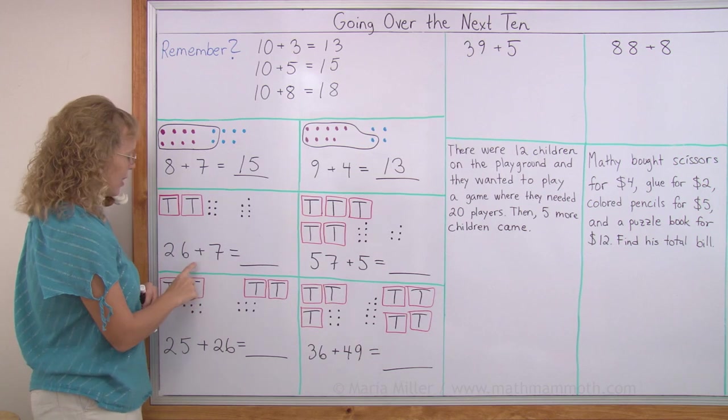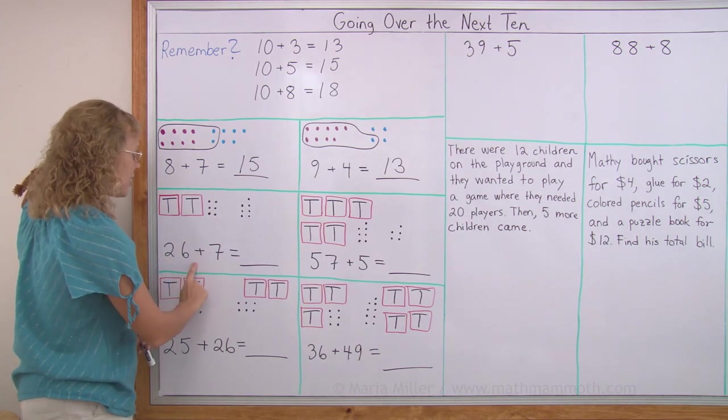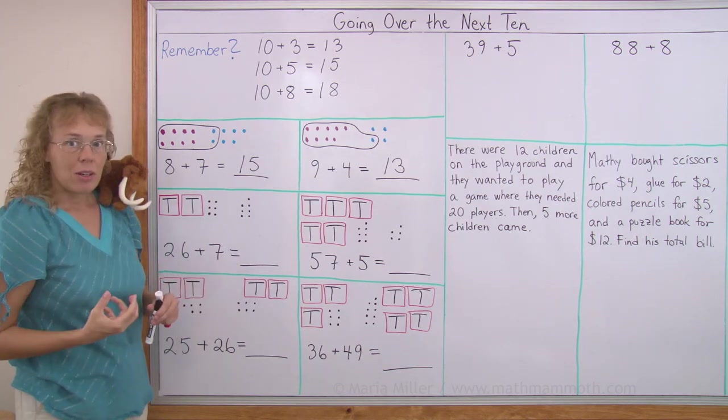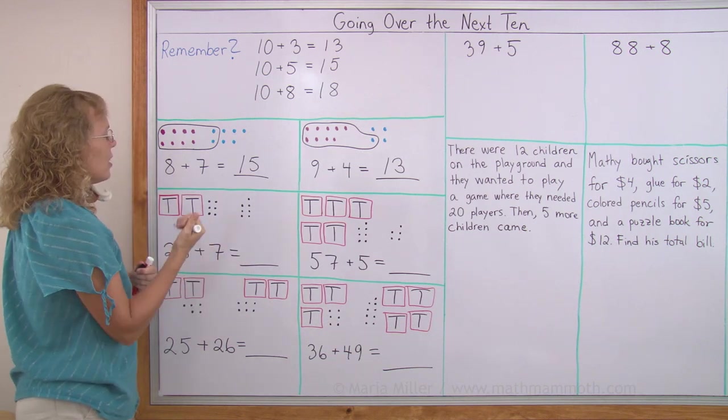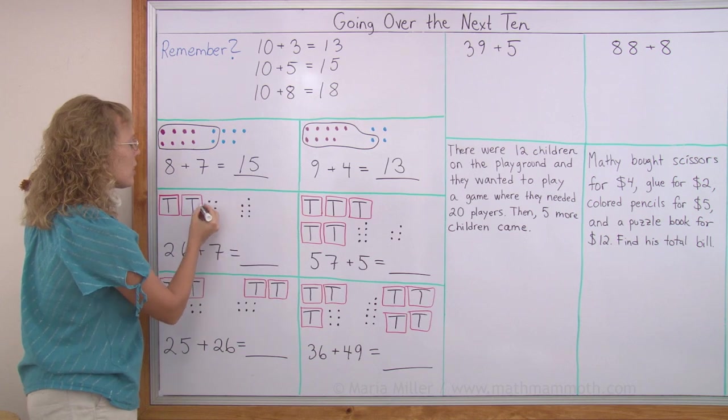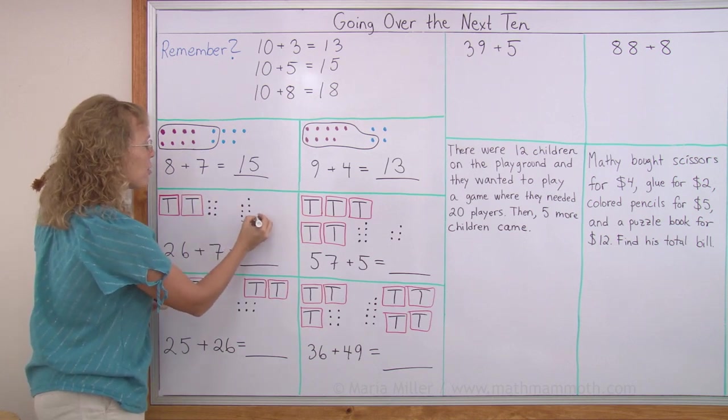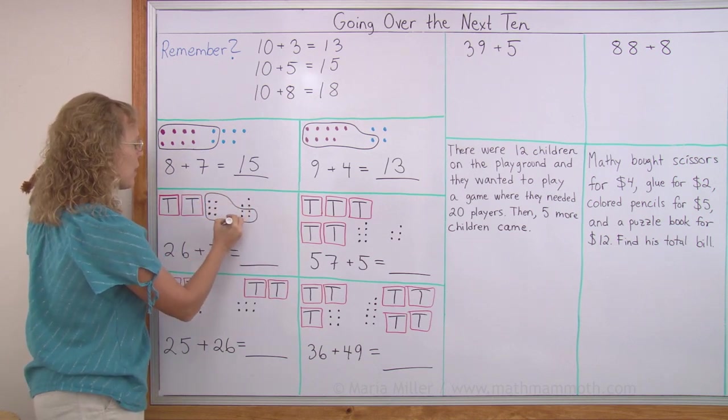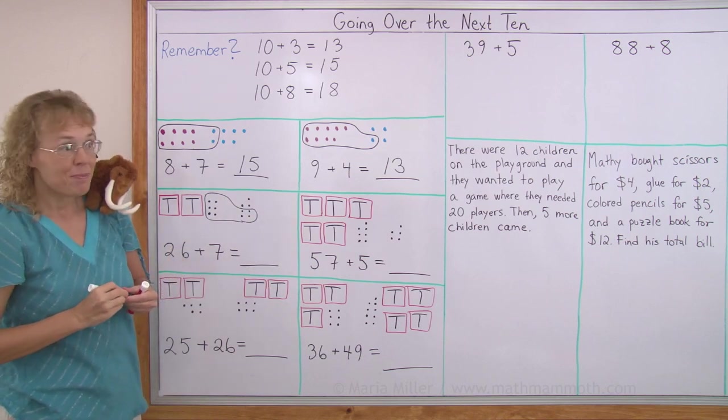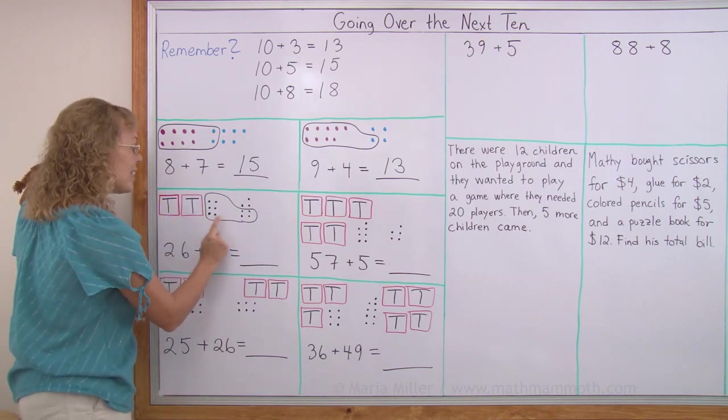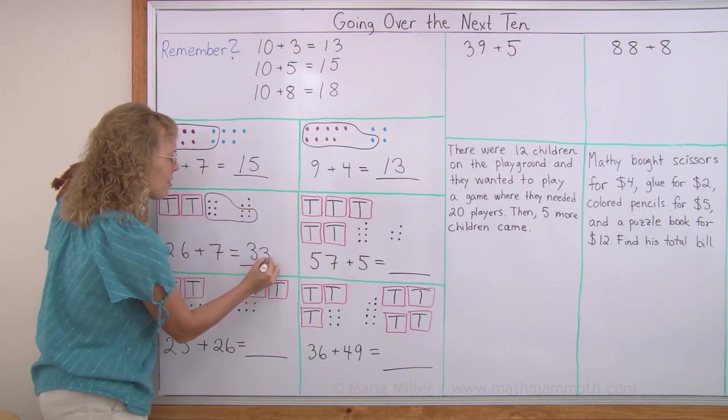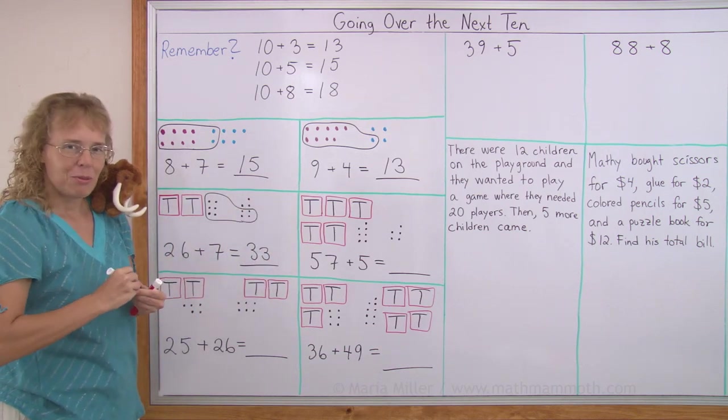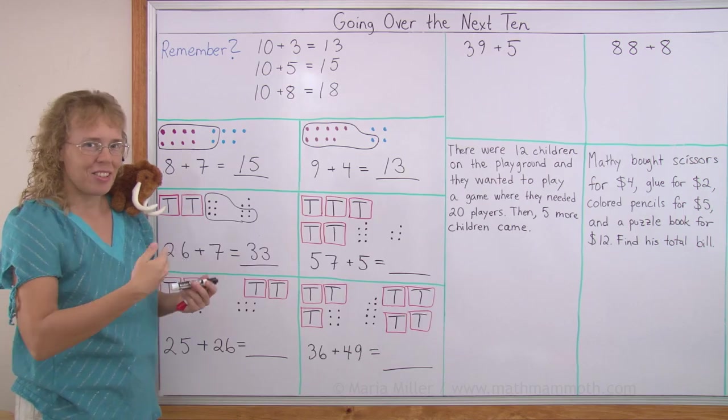And the same happens here. We have 26 plus 7. And now we can make a new 10 from these little dots. Here's 6 and 7. So what I will do is I will take all 6 from here and 4 from here. So I get a new 10. And so now I have 10 and 10 and 10. 3 tens, right? And 3. 3 tens and 3, 33. So the answer went over to the next 10, 30 something.